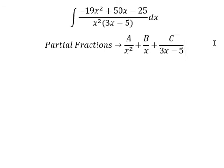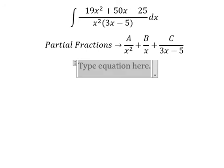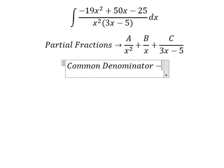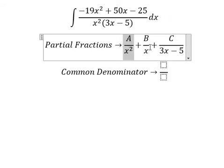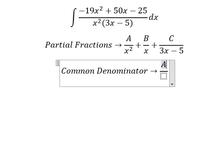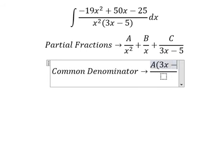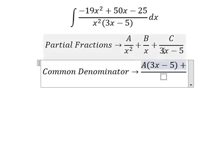Next we do common denominator. This one is missing 3x minus 5, so capital A is multiplied by 3x minus 5.